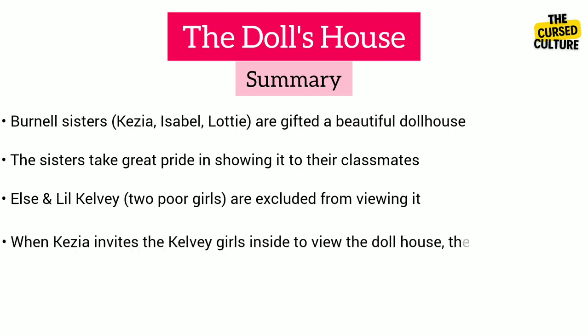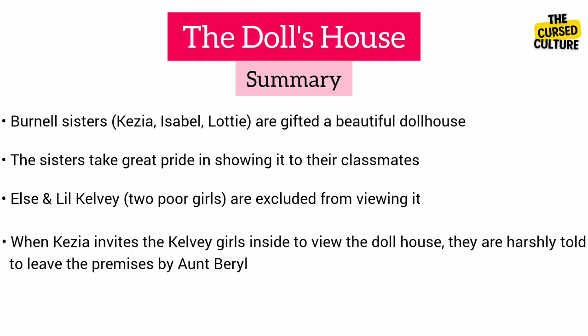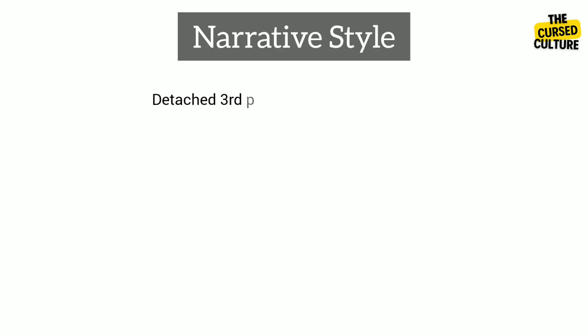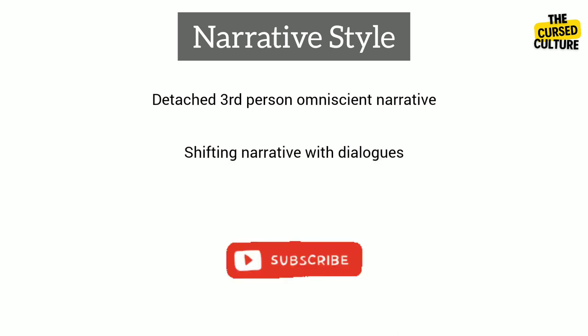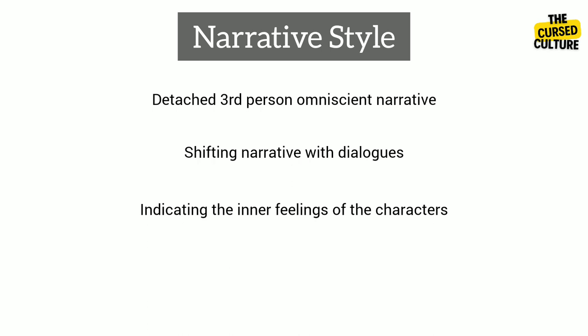When Kezia invites the Kelvy girls inside to view the dollhouse, they are harshly told to leave the premises by Aunt Beryl. It is a detached third-person narrative that is omniscient but shifting at times, with dialogues indicating the inner feelings of the characters. The narrative is haphazard and episodic with features of modernism.